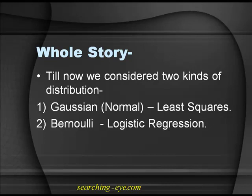In general form, the Bernoulli distribution is: probability of y given x_i, parameterized by phi, equals phi to the power y_i times 1 minus phi to the power 1 minus y_i.